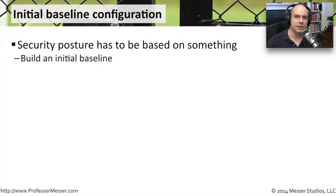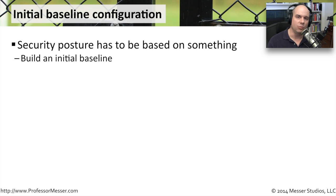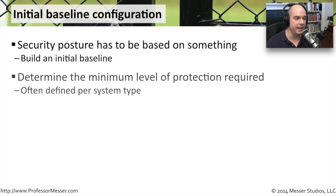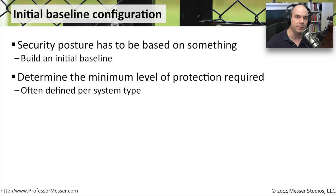When you're building out a security posture, it has to be based on something. So one of the first things you'll do is build an initial baseline of what you would like your security to be. This often takes a lot of planning and a lot of thought. You have to look at the requirements that you have, the things that you need to protect. There's generally a minimum level of protection you're thinking about for the data and the systems that you have in place.